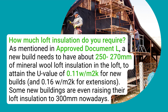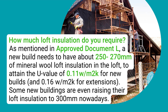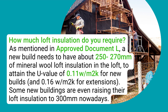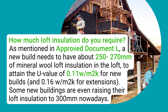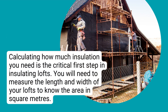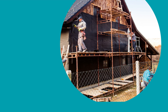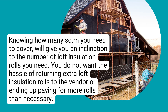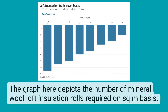How much loft insulation do you require? As mentioned in Approved Document L, a new build needs to have about 250–270 mm of mineral wool loft insulation in the loft to attain a U-value of 0.11 W/m²K for new builds and 0.16 W/m²K for extensions. Some new buildings are even raising their loft insulation to 300 mm nowadays. Calculating how much insulation you need is the critical first step. You will need to measure the length and width of your loft to know the area in square meters, which will indicate the number of loft insulation rolls you need. The graph here depicts the number of mineral wool loft insulation rolls required on a square meter basis.